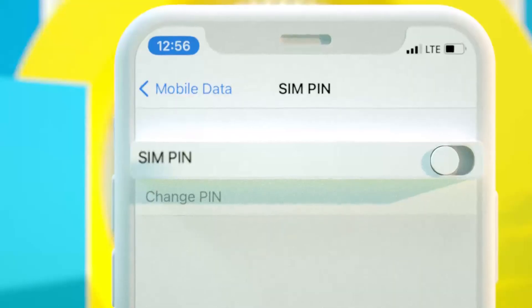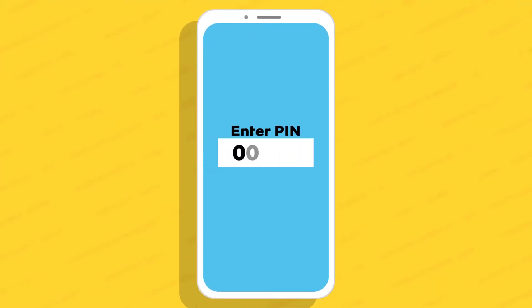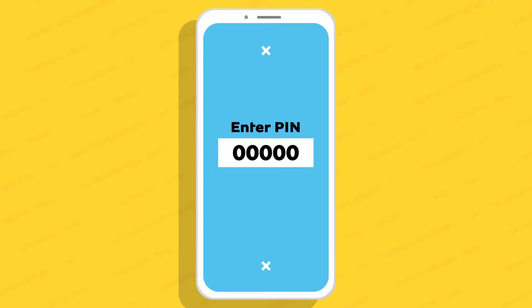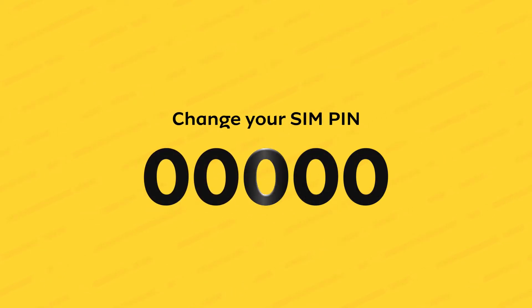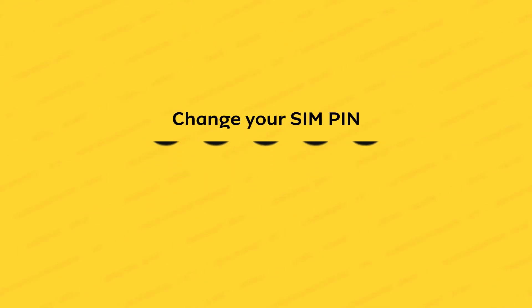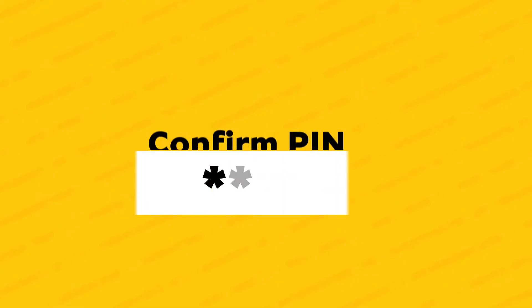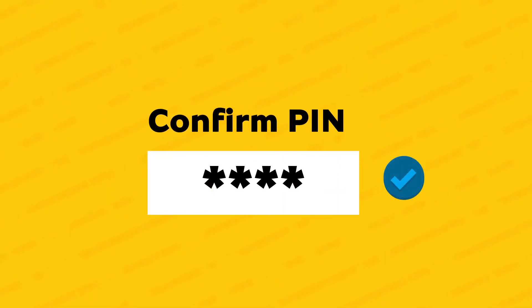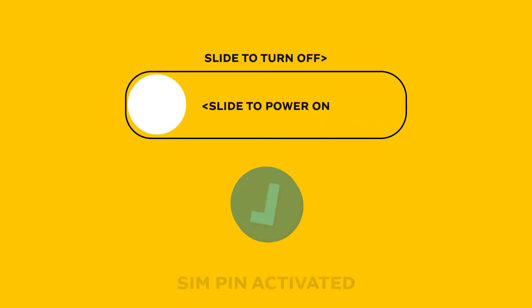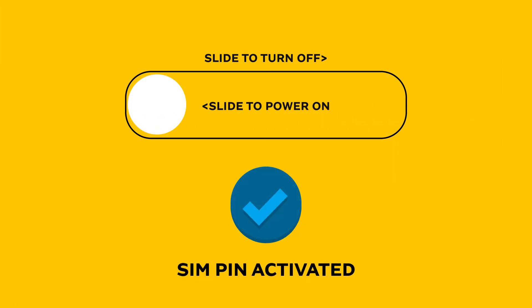Activate SIM PIN. Insert your MTN default SIM card PIN, which is 0000. Immediately change your SIM PIN from the default to a unique 4-digit SIM PIN known to you only. Confirm your 4-digit unique PIN. Power off and on your device to check if the SIM PIN is activated.